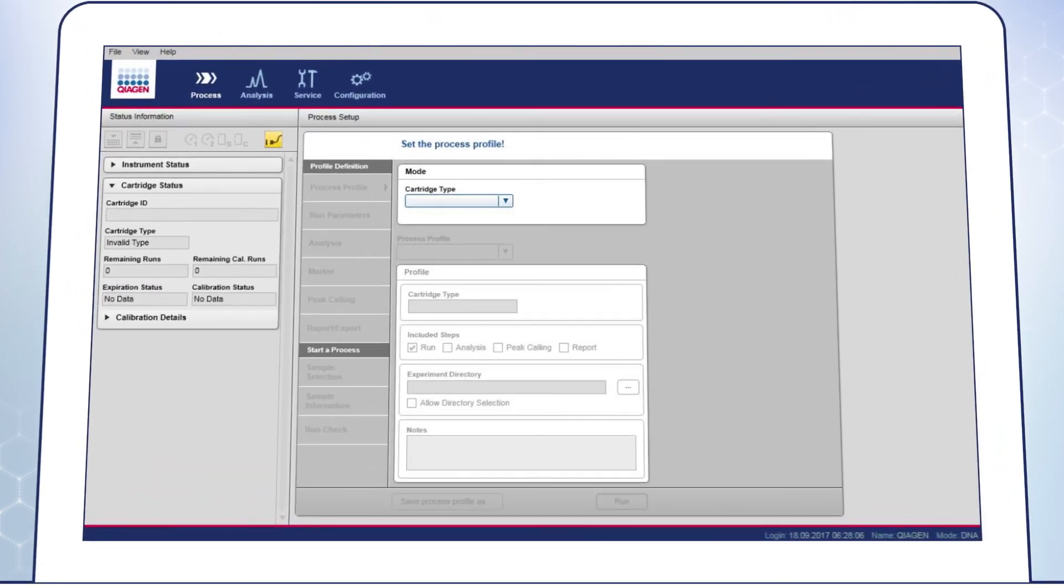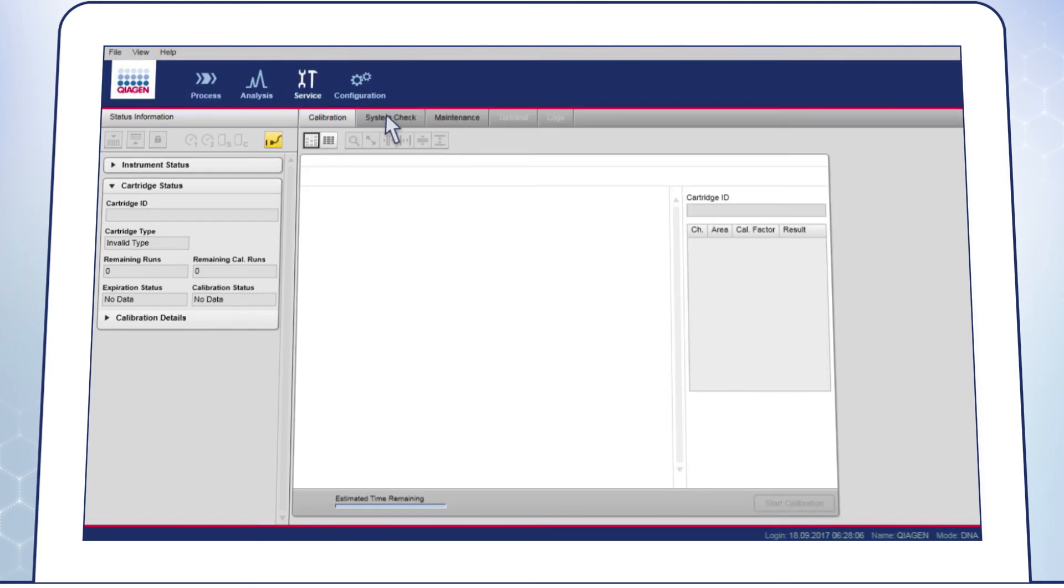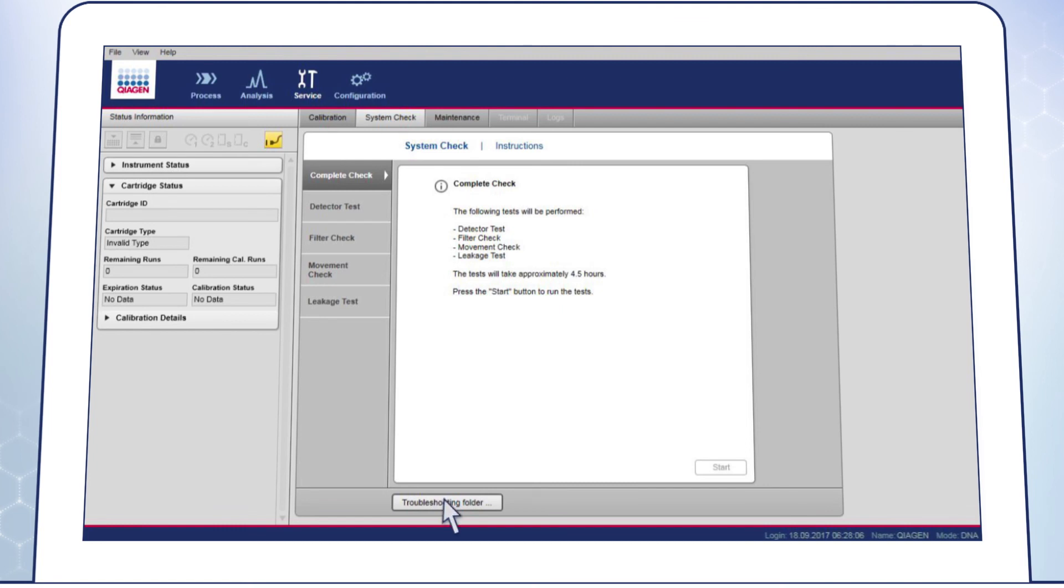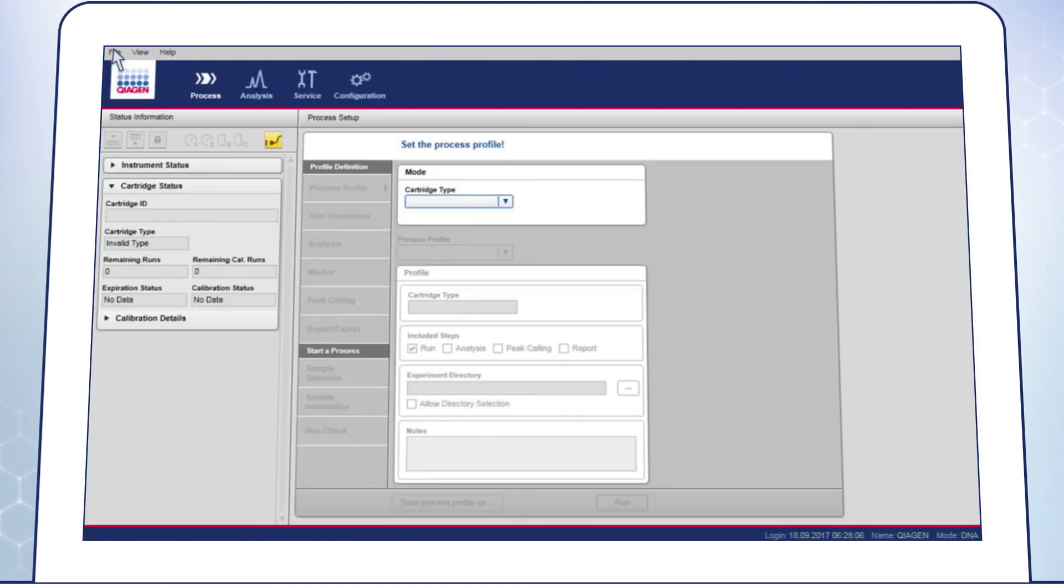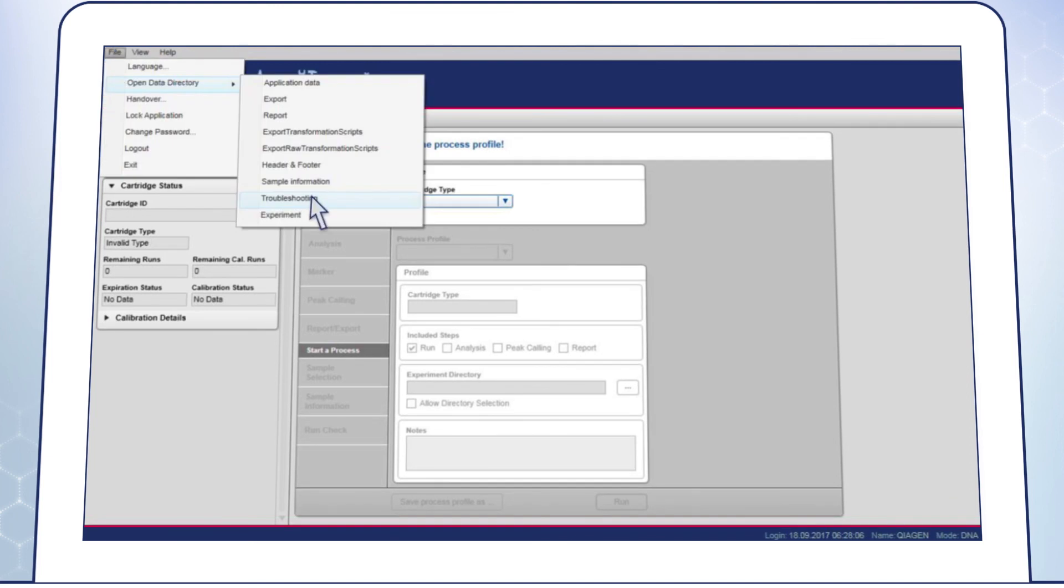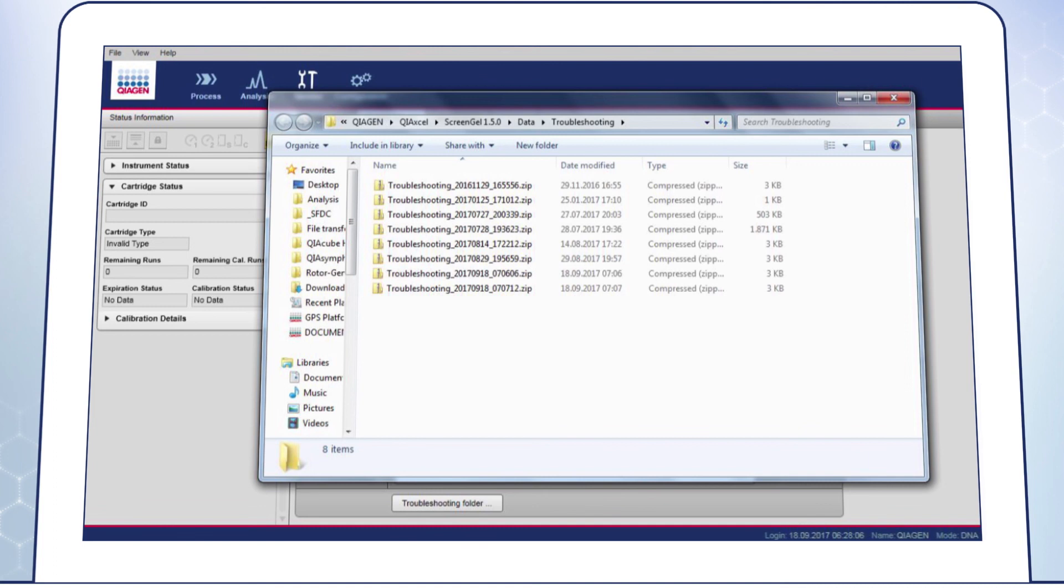In case any support is required, prepare the following data before contacting Qiagen Technical Services. 1. Troubleshooting Folder: In case of communication issues or if a system check was performed, please create a troubleshooting folder by going to the Service Environment and go to the System Check screen and click on the Troubleshooting Folder button below. Select the Start and End Date. Select the Test on the left side if one was performed. On the right side, always select Main Air IVD and Instrument. Click OK. Then go to File, open the Data Directory and Troubleshooting and then add the appropriate Troubleshooting zip folder to your email.